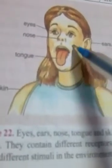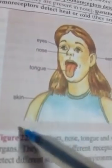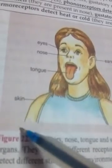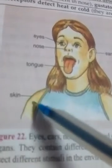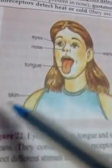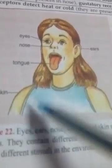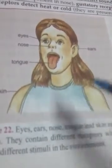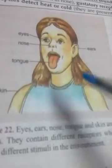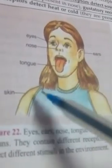The tongue detects taste, so it has a receptor cell called a gustatory receptor cell. Skin receives stimulus in the form of heat, so it is called a thermoreceptor cell. These receptor cells receive stimulus from the external environment and send the message in the form of an electric impulse to the brain or spinal cord.